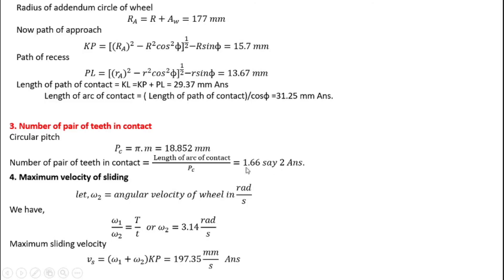Since the number of pairs of teeth in contact cannot be a decimal, we take the maximum rounded value of 2. For maximum velocity of sliding, the formula is (ω₁ plus ω₂) multiplied by KP. We already have the value of KP. To find ω₂, we use ω₁ divided by ω₂ equals capital T divided by small t. From that, ω₂ comes to 3.14 radians per second. Substituting all values into the equation gives us the maximum sliding velocity.